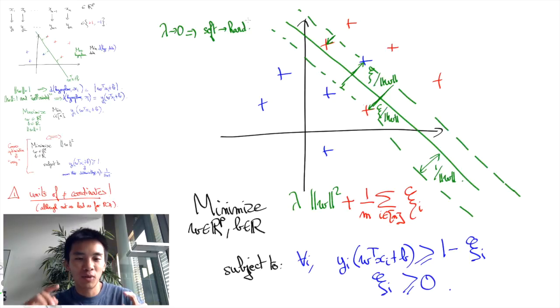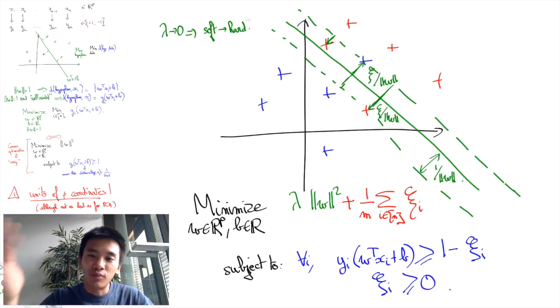In fact, the term corresponding to lambda can also be interpreted as a regularization term which is added to the objective function to avoid overfitting. In any case, this program called soft SVM is guaranteed to always give you a linear separator and you can use this linear separator to make predictions on new data later on.